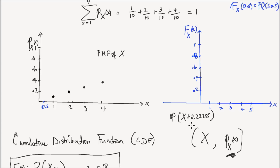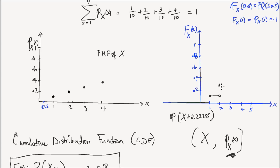I have a probability mass at 1, so the CDF at 1 jumps to 0.1. The CDF at 1 is equal to the probability mass at 1, which is 0.1. Since I don't have any jump until point 2, the CDF stays constant until you get there, and then it jumps by some amount.